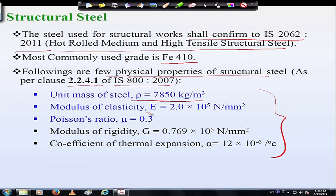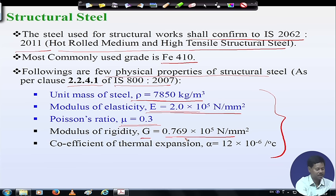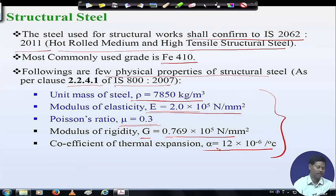The modulus of elasticity is important to find the stiffness of the steel member and is considered as 2 × 10⁵ N/mm². Poisson's ratio is generally considered as 0.3 and the modulus of rigidity G is 0.769 × 10⁵ N/mm². The coefficient of thermal expansion alpha is 12 × 10⁻⁶ per degree Celsius, which is needed to calculate thermal stress due to expansion or contraction of steel members.